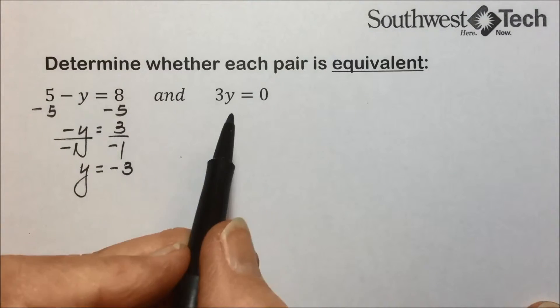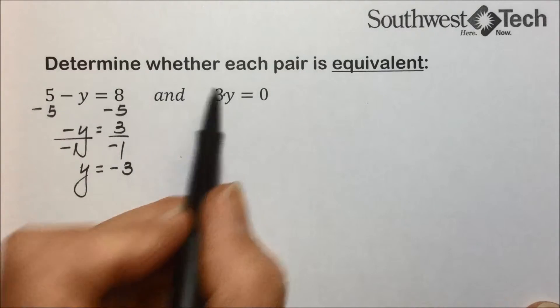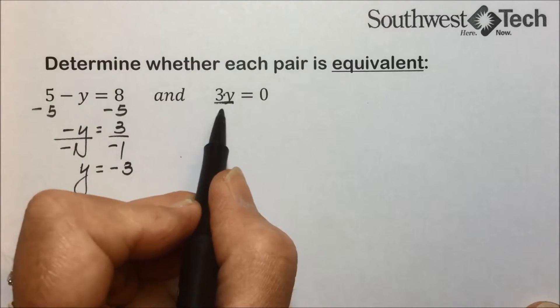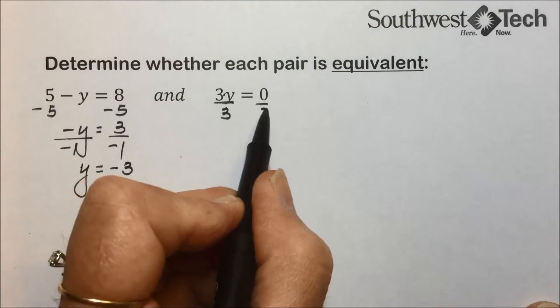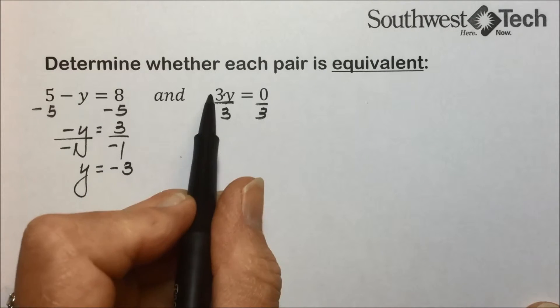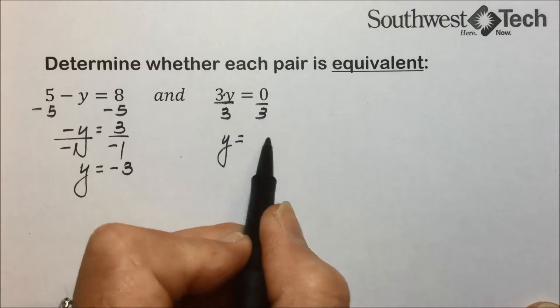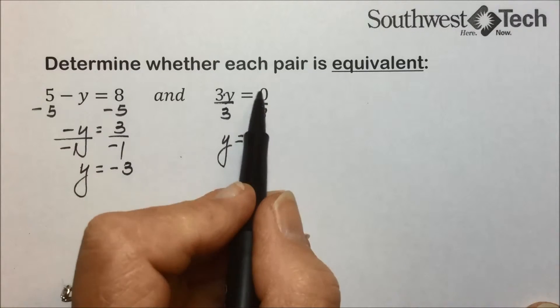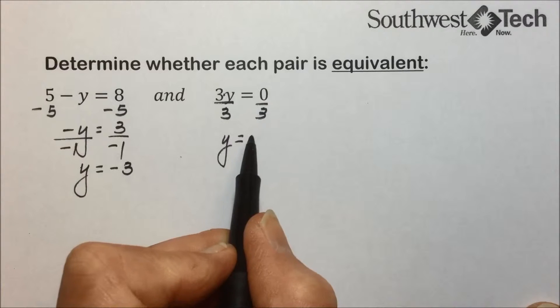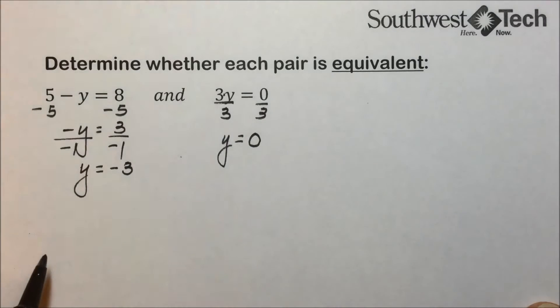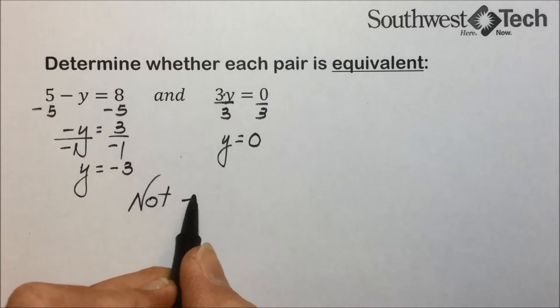On this other equation, to solve for y, since it's multiplied, we'll undo multiplication with division. That leaves us with 3 divided by 3 is 1y. And 0 divided by 3, any time we have 0 divided by a number other than 0, we get 0. Since these two equations do not have the same solution, they are not equivalent.